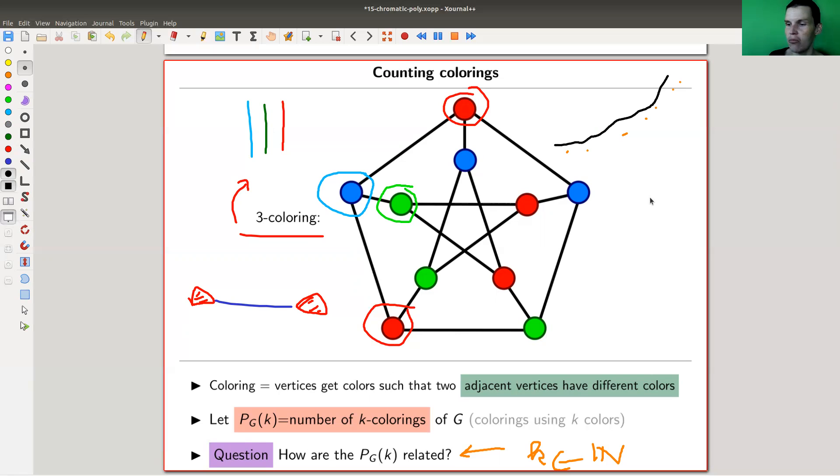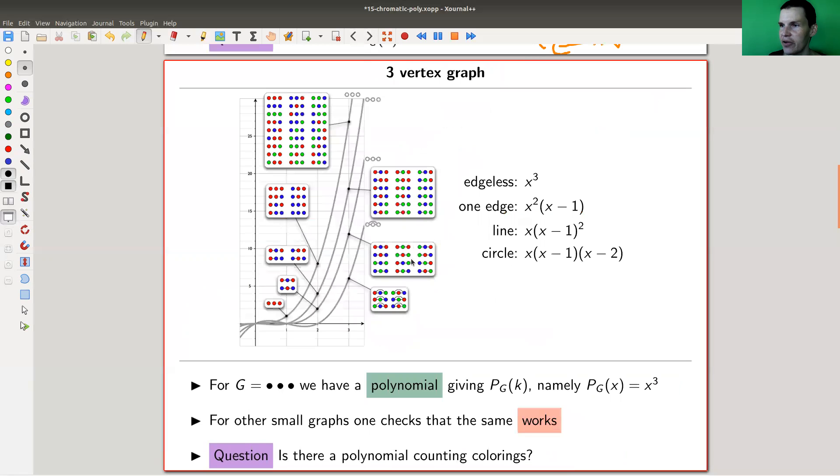Well, is there a curve? Well, there's clearly some curve. Is there some nice curve where all number of colors live on? So here's an example. So the three graphs I have here is the edgeless graph.